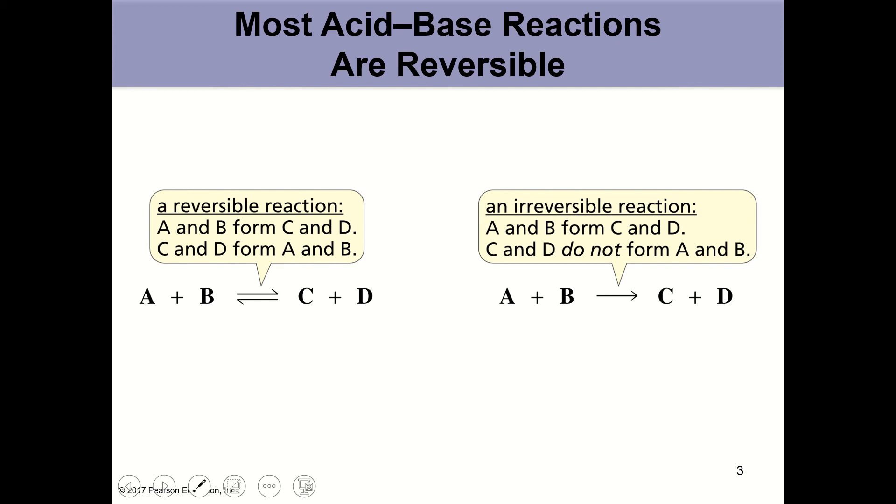Most acid-base reactions are irreversible, but you need to know which reactions. Most acid-base reactions are irreversible, and only a few are irreversible, and you need to know which ones. What affects the reversibility or irreversibility of a reaction. So if we have a strong acid like HCl, which has a pKa of about negative 3.